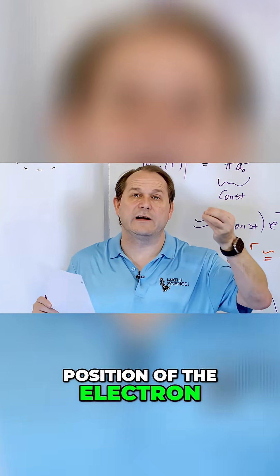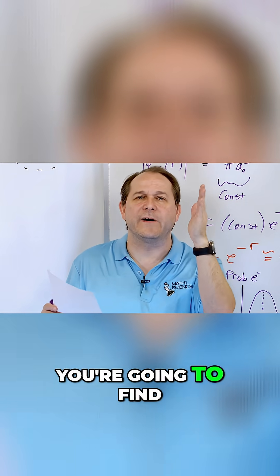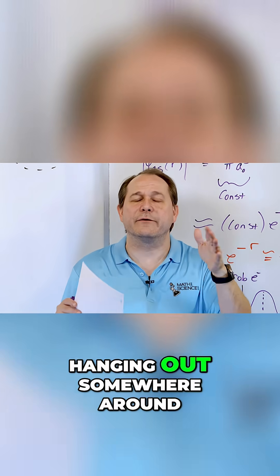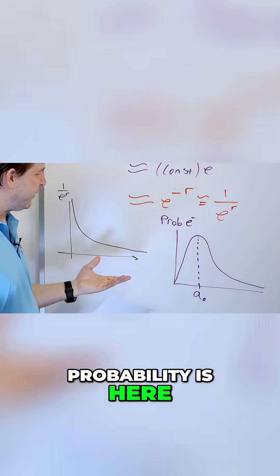If you measure the position of the electron in the atom for the lowest energy level, most of the time you're going to find the electron hanging out somewhere around the Bohr radius. The maximum most likely probability is here.